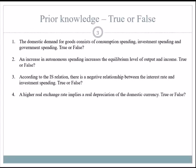An increase in autonomous spending increases the equilibrium level of output and income — that is also true. According to the IS relation, there is a negative relationship between interest rates and investment spending — also true. If interest rates are lower, the hurdle rate to make new investments is lower, so it's easier to invest. Importantly, when we talk about investments here, we mean physical investments — capital expenditure by companies or government on infrastructure, not investing in the stock market.